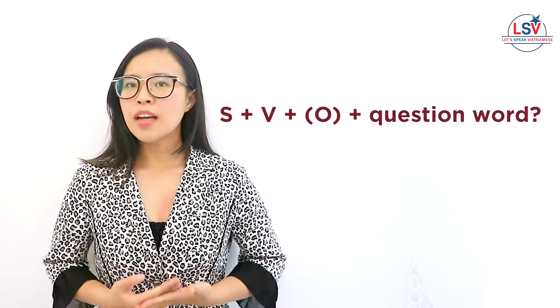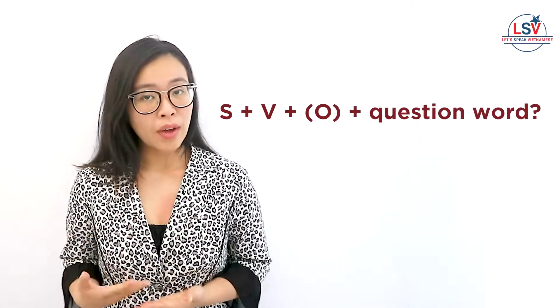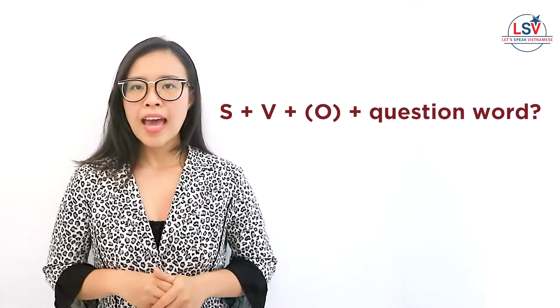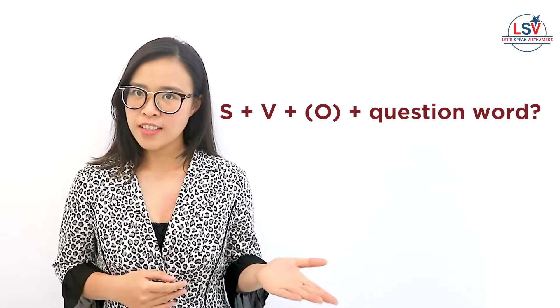The first thing you need to know about question words is that most of them will go at the end of a question. To form a question in Vietnamese, you don't have to think too much. You just have to follow this structure: subject plus verb plus object if you have one, and then the question word at the end.